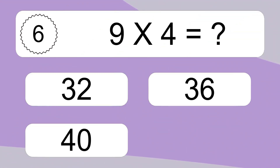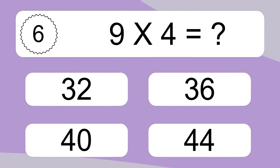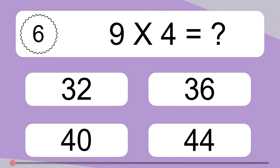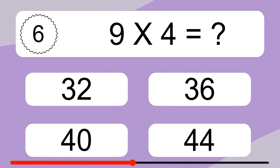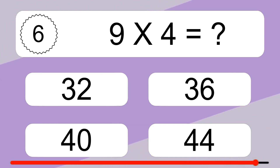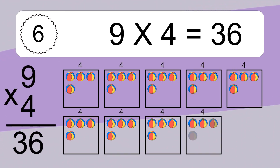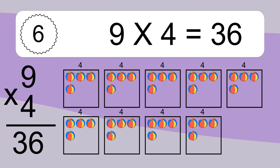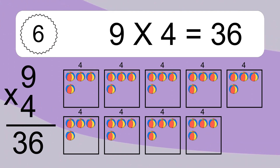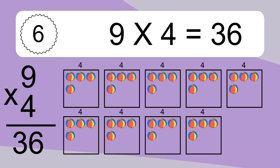9 times 4 equals what? We have 9 boxes, and each box has 4 colorful balls inside. If you count all the balls in all the boxes together, you will have 9 times 4 balls. This equals 36 balls.